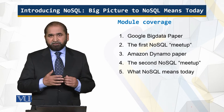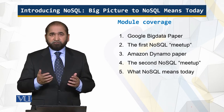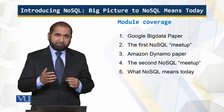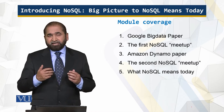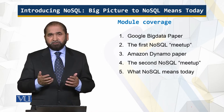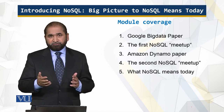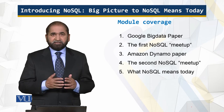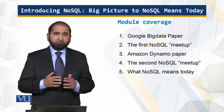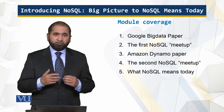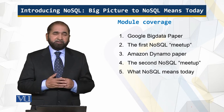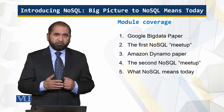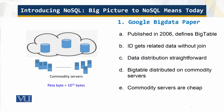Then we will talk about the NoSQL meetups, which predate the Big Data paper, and then the Amazon Dynamo paper — these are kind of milestones that set the standards. Then we will talk about the second NoSQL meetup and what NoSQL means today.